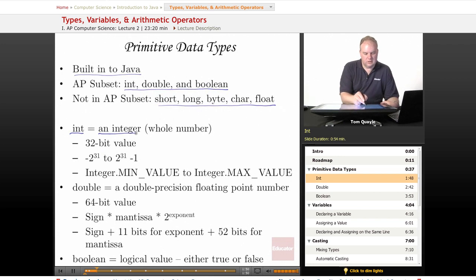Int stores an integer or a whole number. An int in Java is always a 32-bit value. That means there's 32 bits of information that can be used to store that number. The largest possible value that can be stored is 2 to the 31st power minus 1, and the largest negative value would be negative 2 to the 31st.